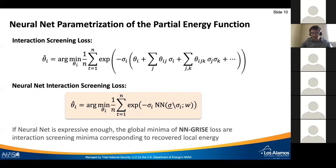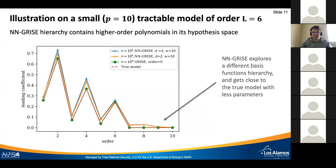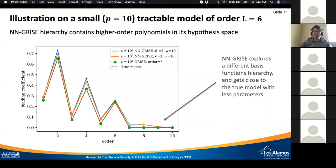As long as we can find the global minimum of this interaction screening loss based on neural networks, it is a legitimate estimator and we will reconstruct the right model. The entire purpose was to say that neural network will explore a different basis function hierarchy. Let us illustrate this on a small example. Here we take a small model on 10 variables with interaction order equal to six.